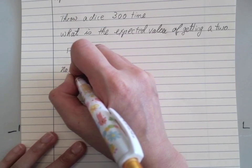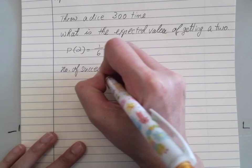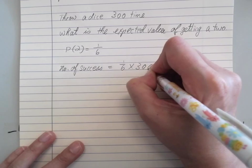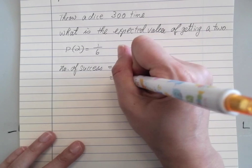the number of trials I will expect will be 1 over 6 times 300, which is 50 times.